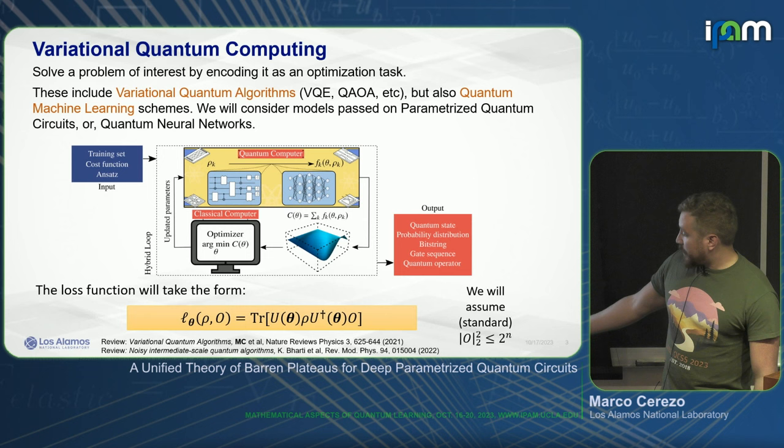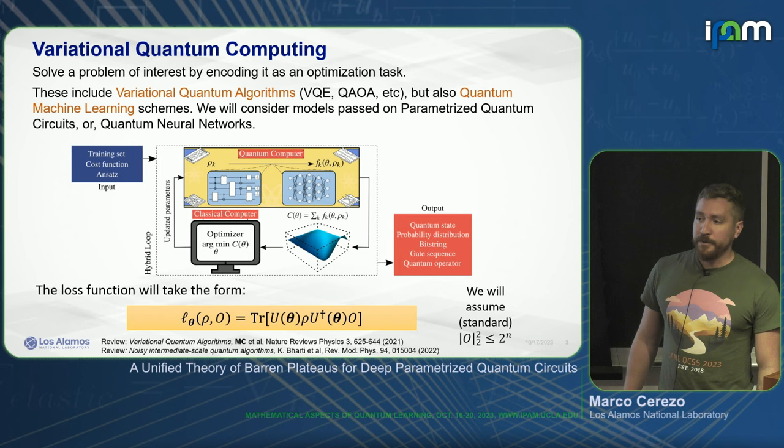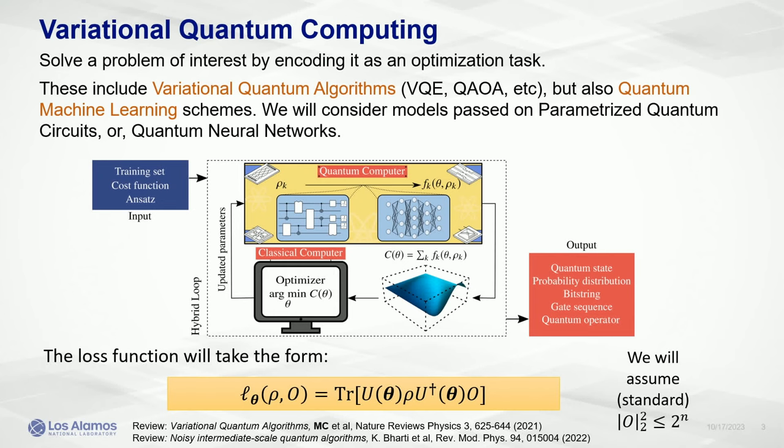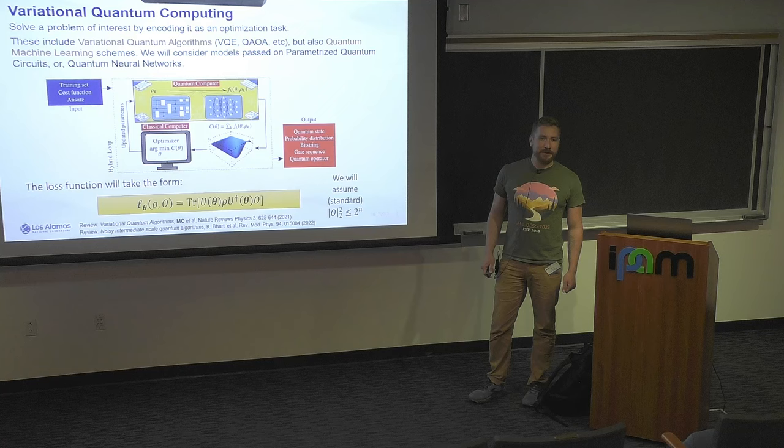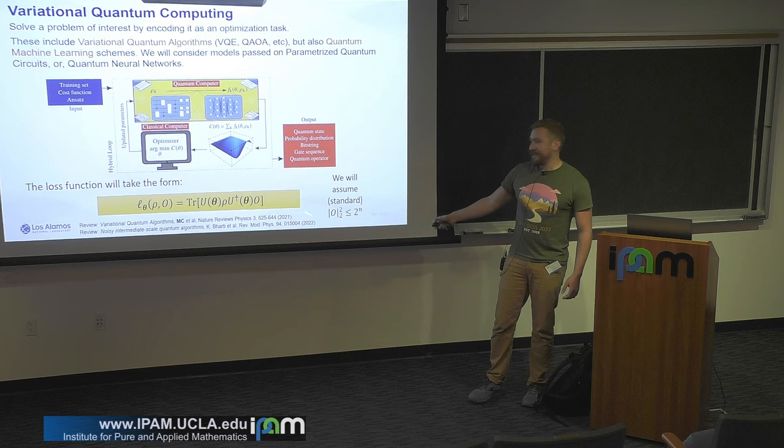The assumption I'll make is that the 2-norm of the measurement operator is upper bounded by 2 to the n — which happens, for instance, in VQE when you normalize your operators if you're measuring a Pauli or a projector. Otherwise, why not just multiply the measurement operator by 2 to the n to solve Barren Plateaus? Zoe will tell you why that doesn't work, so I'll keep this assumption.